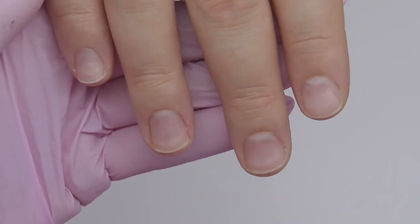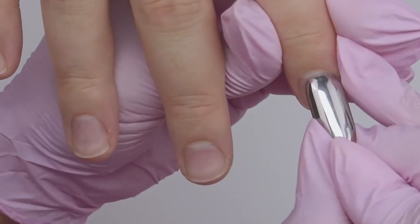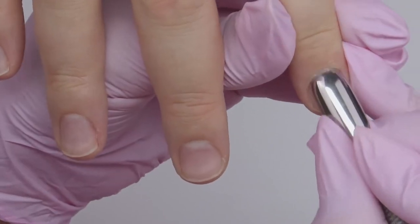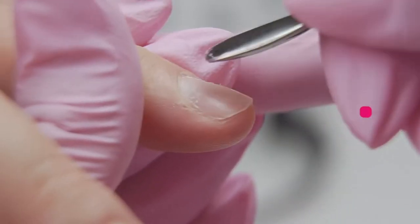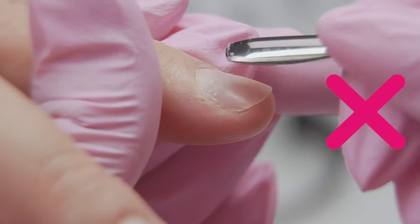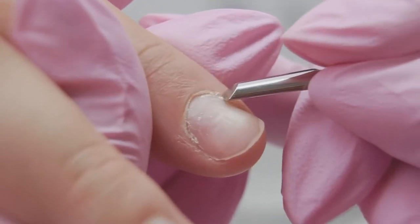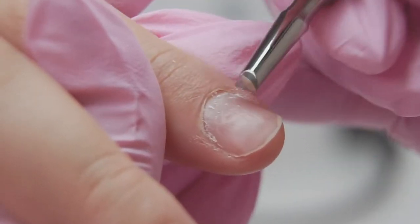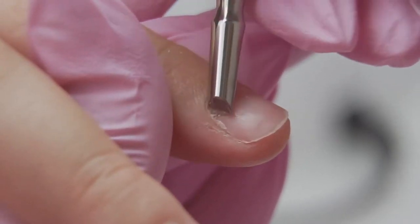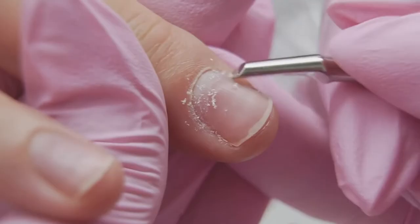First, we lift up the cuticle with the pusher, opening the pocket well. The pusher is always placed at an angle of 30 degrees to prevent digging into layers of the nail plate. I clean out the pterygium which is under the cuticle and on the nail plate using the rectangular side of the pusher.